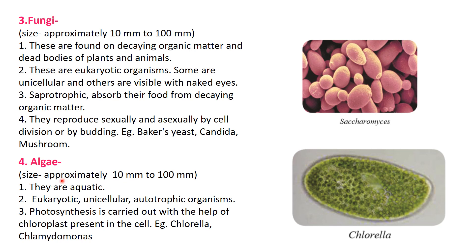Next, algae. Their size is approximately 10 mm to 100 mm. They are aquatic - found in water. In a tank, if it is not cleaned for many days, we can observe the green colored growth inside - that is nothing but algae. Even during rainy season, on the road, on the soil, or on compound walls, we can see the green color growth - that is nothing but algae.